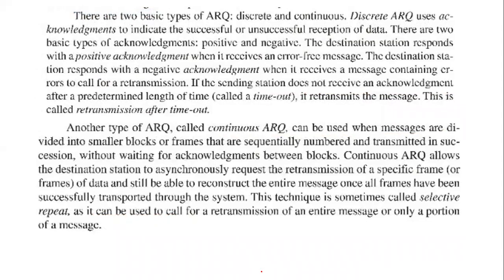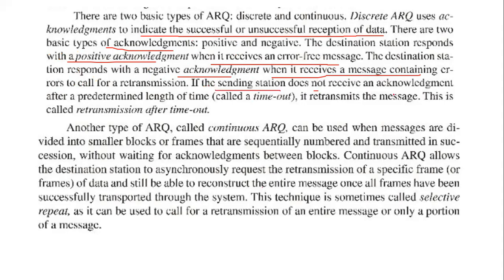There are two basic types of ARQ: discrete and continuous. Discrete ARQ uses acknowledgements to indicate the successful or unsuccessful reception of data. There are two basic types of acknowledgements: positive and negative. The destination station responds with a positive acknowledgement when it receives an error-free message, and a negative acknowledgement when it receives a message with an error, calling for retransmission. If the sending station does not receive an acknowledgement after a predetermined length of time, it retransmits the message — this is called retransmission after timeout.